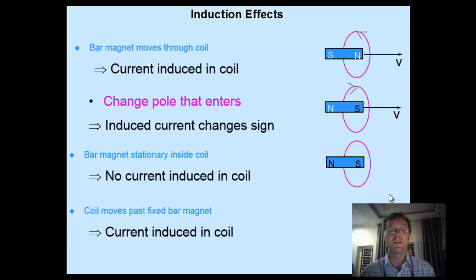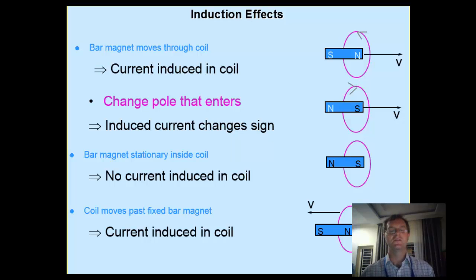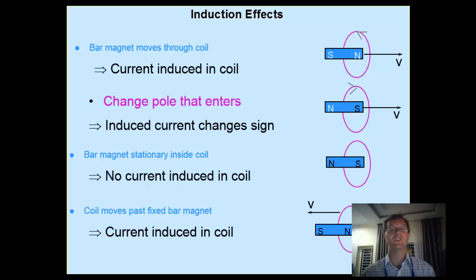We can also work vice versa: if the coil moves past the magnet — keeping the magnet still but moving the coil — we can also induce the flow of electricity. So all of these cases involve changing the magnetic field, either by moving the magnet, or by moving the wire, or by changing the strength of the electromagnet as in the earlier example. In all these ways, we are able to create electricity.